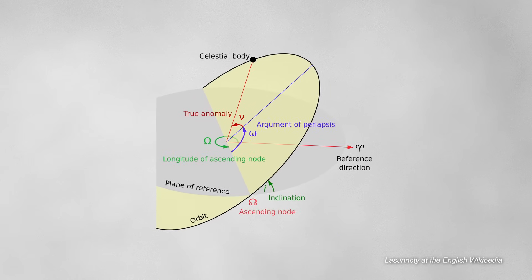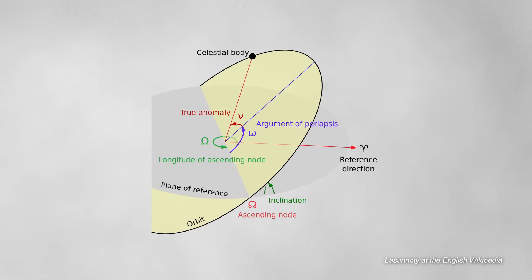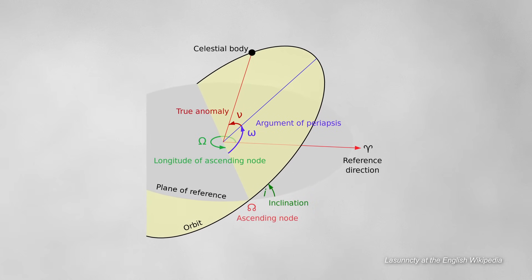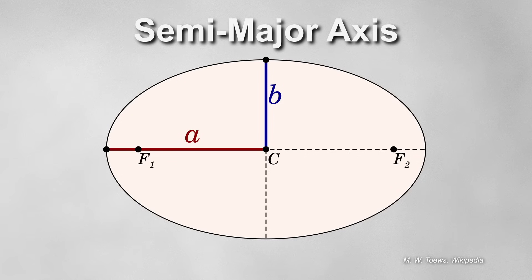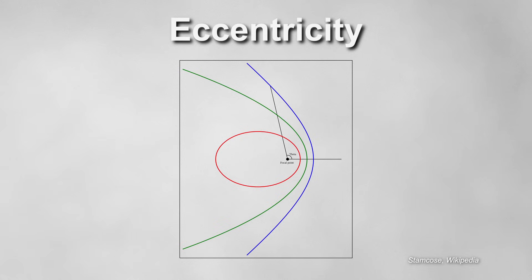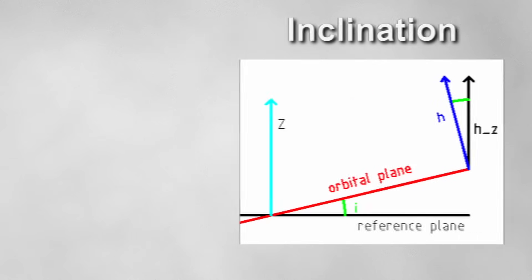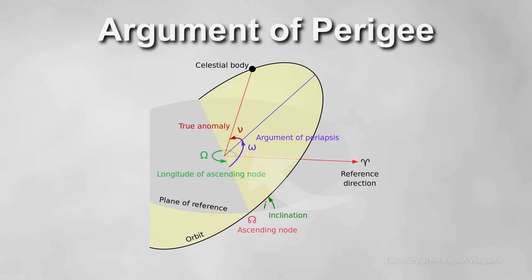Keplerian elements, also known as orbital elements, are a set of parameters used in orbital mechanics to describe the shape, size, and orientation of an orbit. They include the semi-major axis, that indicates how far away the satellite is from Earth, the eccentricity, which describes how elongated the orbit is, the inclination, which describes the tilt of the orbit, and the argument of perigee.